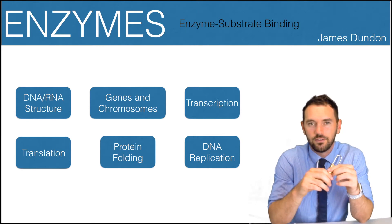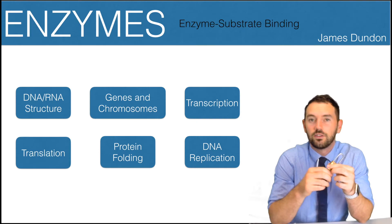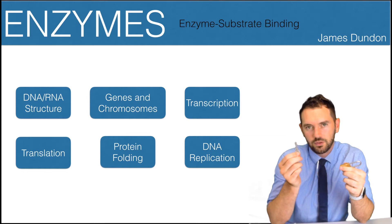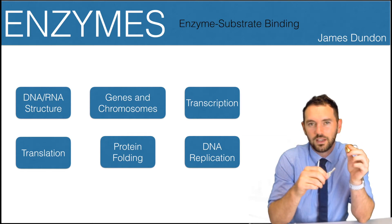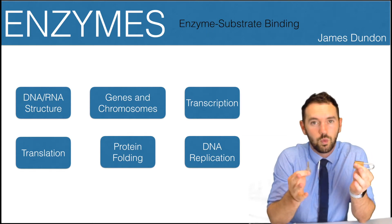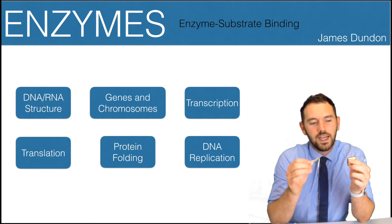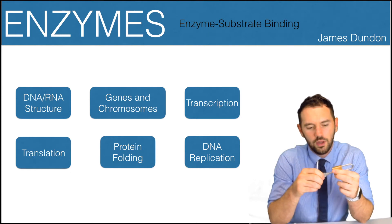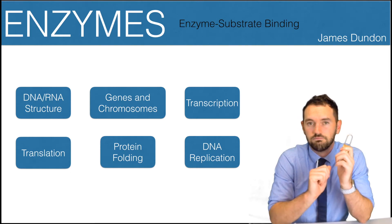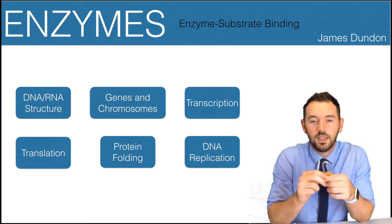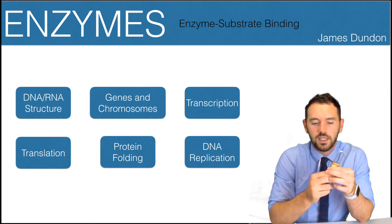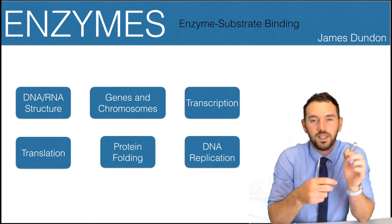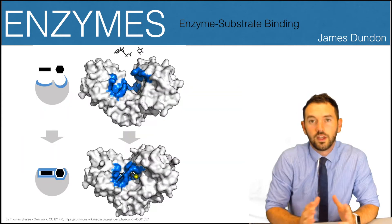So, enzymes and padlocks - what do they have in common? In 1894, Emil Fisher described enzymes using a lock and key model. This meant that substrates were specific to only certain enzymes, with complementary shapes, so a particular substrate would only fit a particular enzyme. Something magical would happen and the enzyme would go to work. Once the substrate was removed and became a product, the enzyme itself remained unchanged.